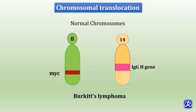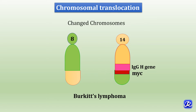Chromosomal translocation occurs in Burkitt's lymphoma, a cancer of B lymphocytes. Translocation occurs between chromosome 8 and chromosome 14. The MYC gene is present on the long arm of chromosome 8 and the IgH gene on the long arm of chromosome 14. The terminal segment of chromosome 8 breaks off and translocates to chromosome 14, placing the MYC gene adjacent to the immunoglobulin heavy chain gene. MYC transcription is then activated by the potent IgH gene enhancer.